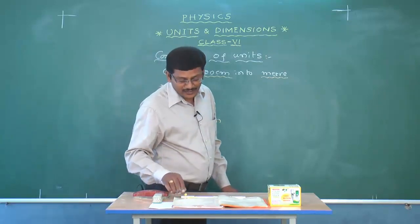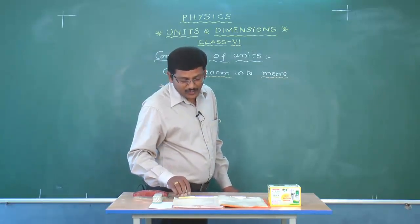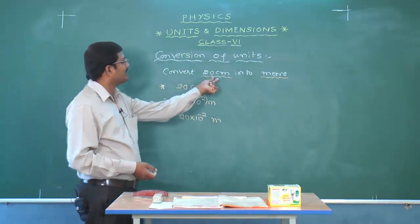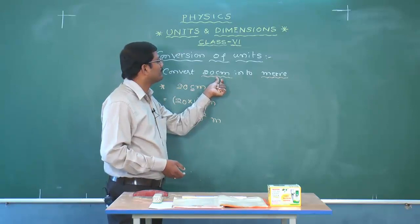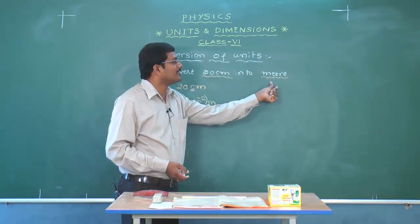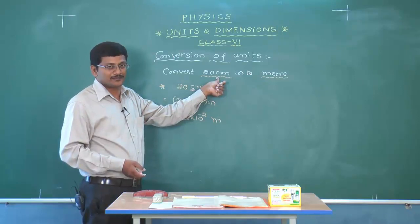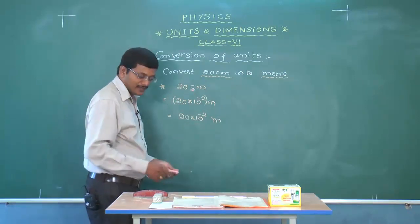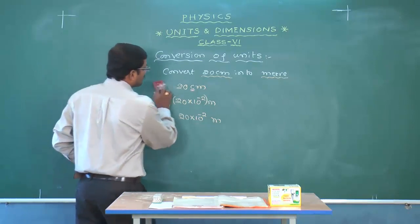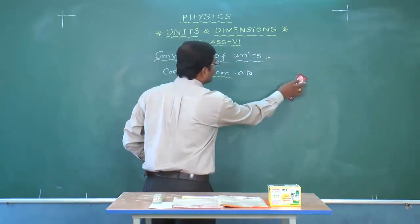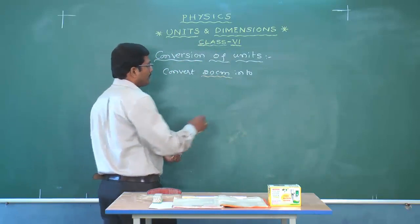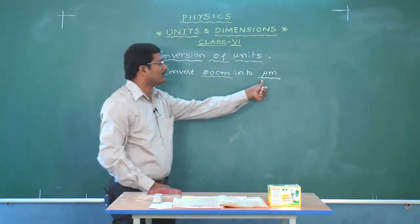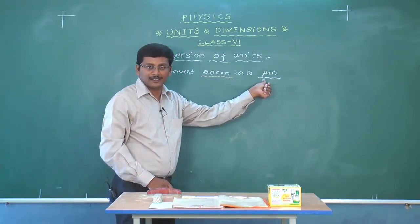Now let us see the next problem: convert 20 centimeters into micrometers. Converting a submultiple of meters into meters is easy because you get a direct answer by substitution. But here we need to convert 20 centimeters into micrometers. Centi is 10 to the power of minus 2, and micro is 10 to the power of minus 6.